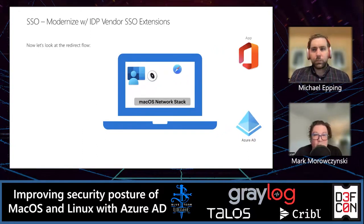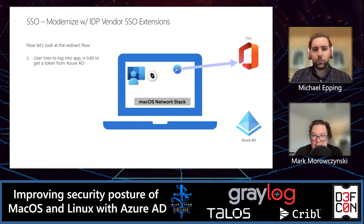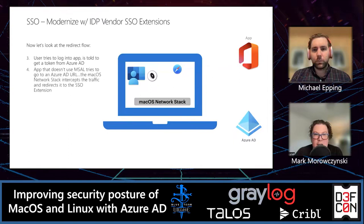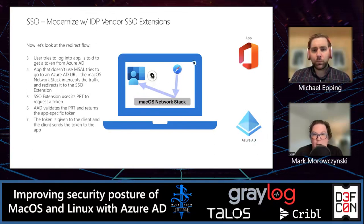For applications not built on MSAL, we use a redirect flow. The user navigates in Safari, for example, to OWA. The app redirects to Azure AD for an access token. The macOS network stack intercepts that request and redirects it to the SSO extension — this is built into the OS. The SSO extension uses the PRT to request the access token from Azure AD, passing Conditional Access policies, and the token is returned up the network stack to the browser and off to the application — SSO achieved without MSAL libraries.